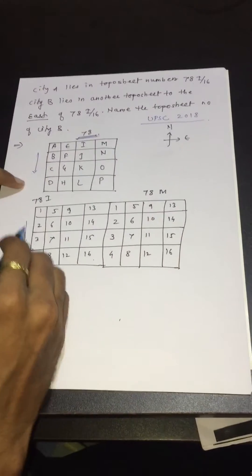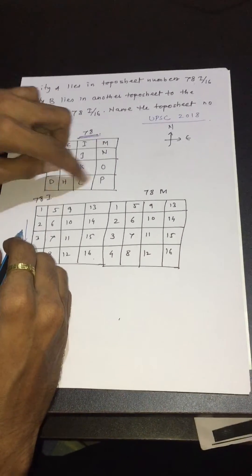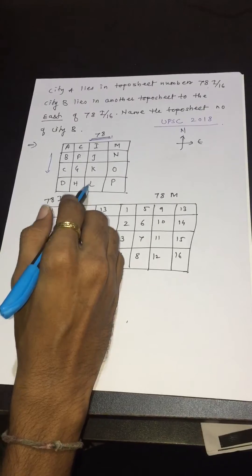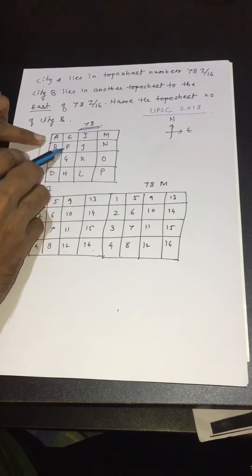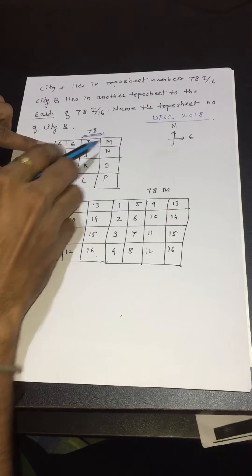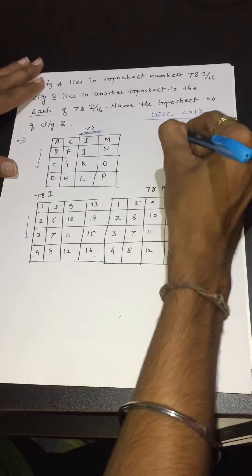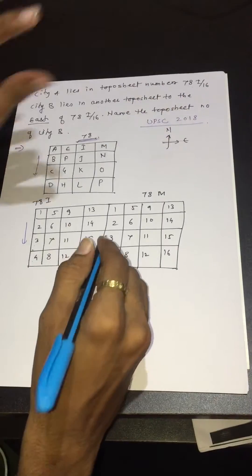Draw a square and divide it into 4 columns and 4 rows. These are 16 boxes. Now label vertically A, B, C, D, E, F, G, H, I, J, K, L, M, N, O, P. Now give the direction: this is north and this is east.